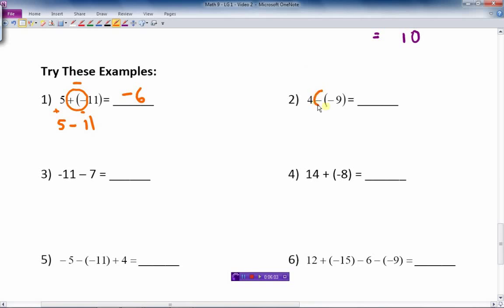Next question. Two signs again. These are the same this time. So it becomes a positive here. The question becomes 4 plus 9. Both are positive. Add them together. Get 13, because they're both positive, make a bigger positive.